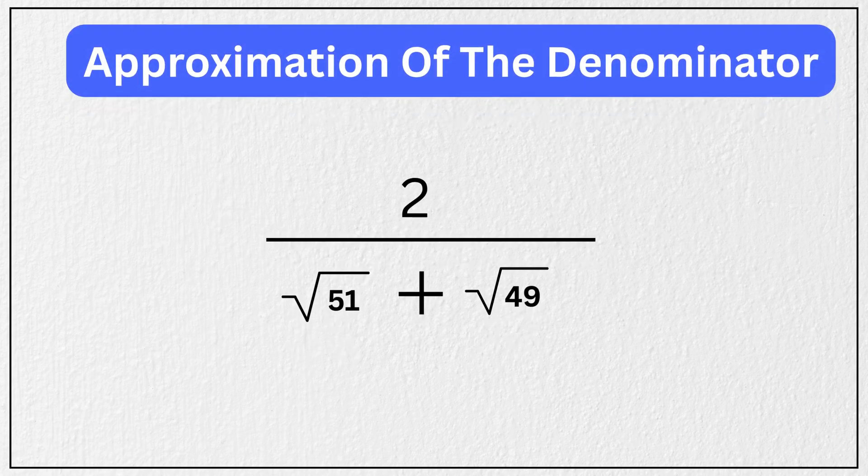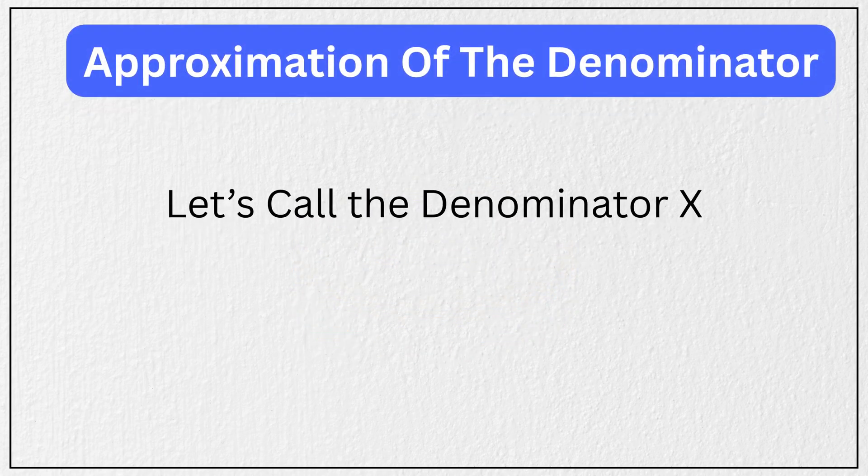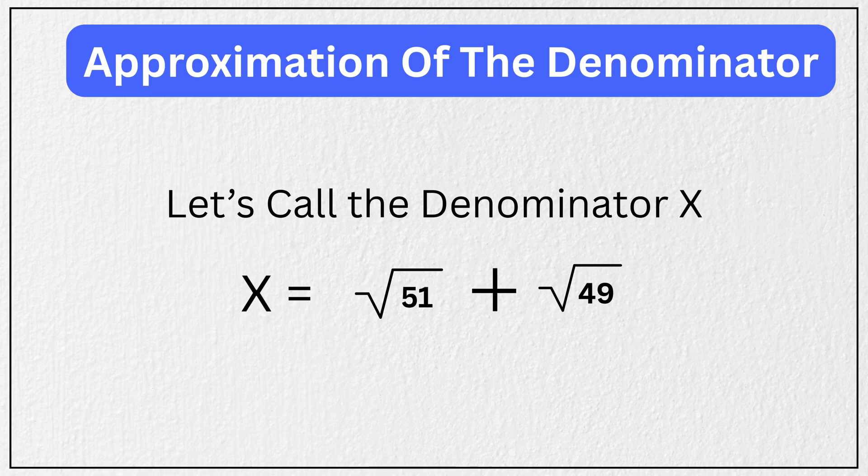Our goal now is to approximate the denominator. Let's call the denominator x. So we want to find an approximate value for x = √51 + √49.